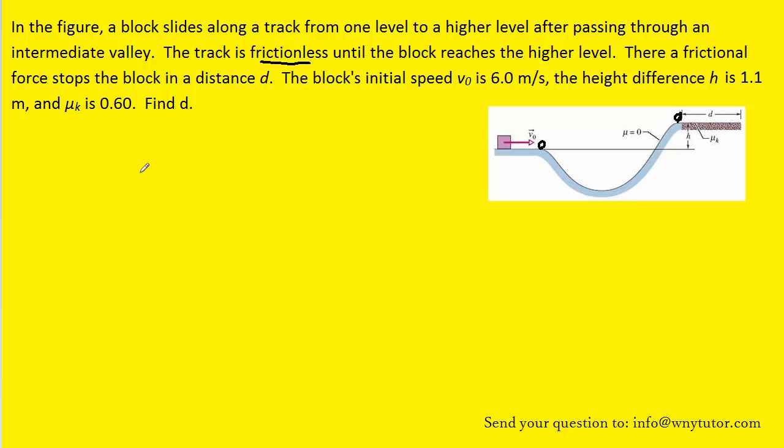So let's write down the conservation of mechanical energy principle. Now here we have the two main forms of mechanical energy. We have the kinetic energy and the gravitational potential energy. We have subscripts i to represent the initial quantities and then f to represent the final quantities.